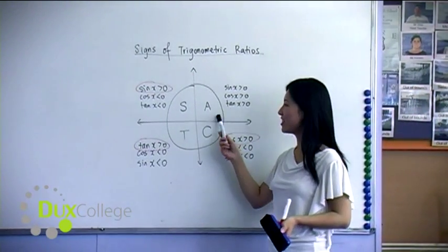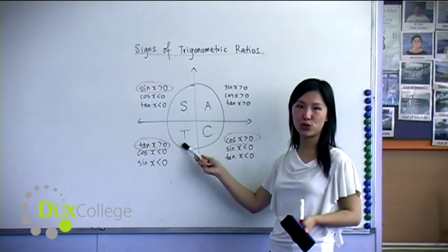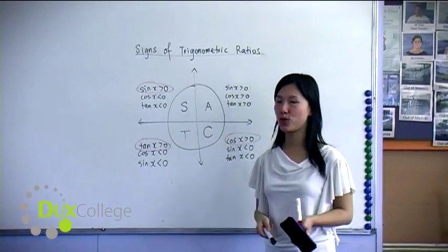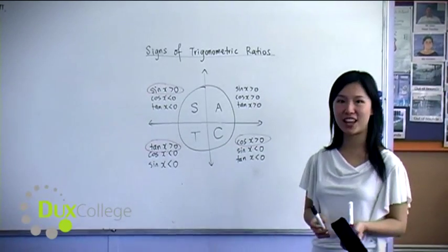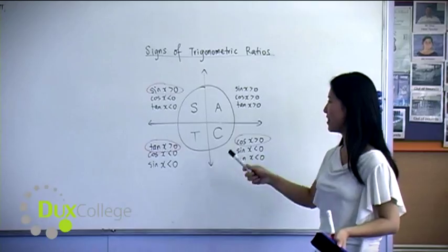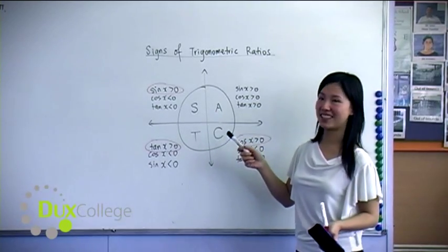At school, you may have learned this as all stations to central, but I like to call it all stations to Cabramatta, or you can call it all stations to Kempsey, whichever suburb that you live in that starts with the letter C.